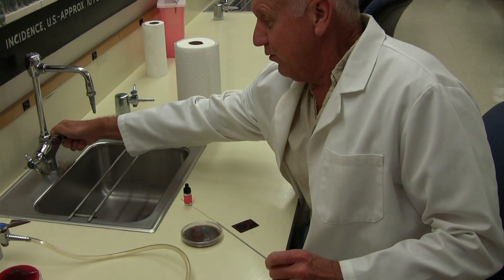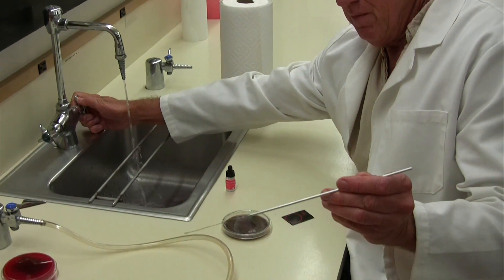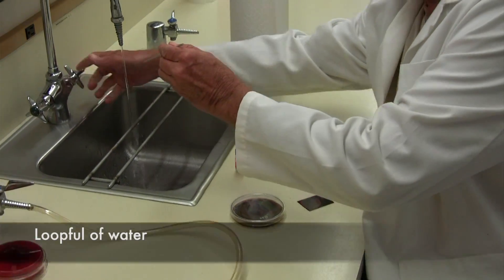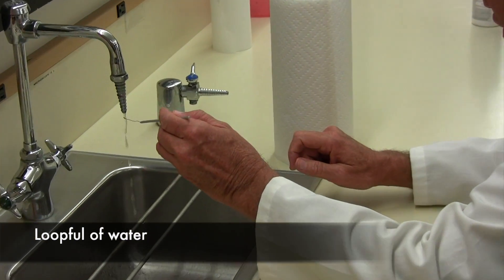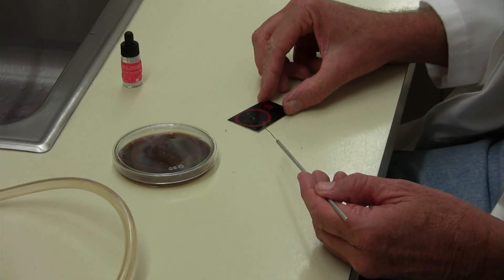The way you do this is take a loopful of water. We're going to flame the loop first, and then take a loopful of water, put it on the black slide, and then we're going to flame the loop again.